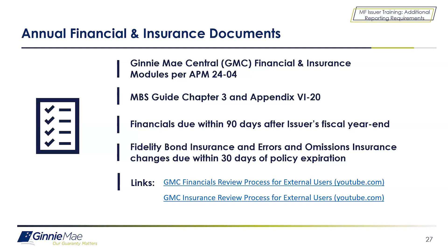Regarding annual financial documents: an important task for issuers is to upload your company's annual financial documents annually, in accordance with MBS Guide Chapter 3 and Appendix 6-20. These documents must be uploaded into the New Ginnie Mae Central module. Financial documents are due within 90 days of the issuer's fiscal year end. Bond and E&O insurance documents are due within 30 days of policy expiration.